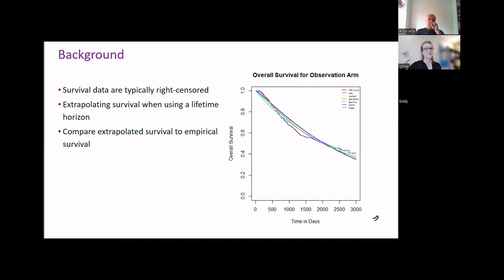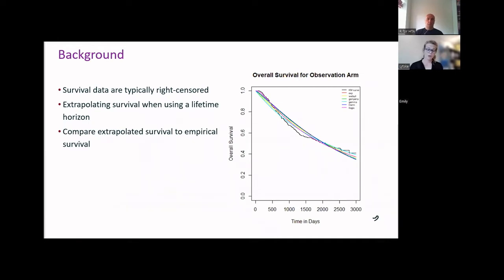As we're all well aware, survival data are typically right-censored, and in our cost-effectiveness analyses, we generally need to extrapolate results since we adopt a lifetime horizon, definitely longer than the average trial. As I just mentioned, in my study I had to compare short-term extrapolations based on short-term results to long-term empirical survival.